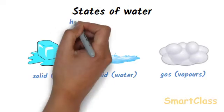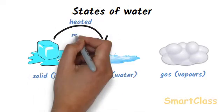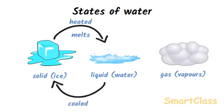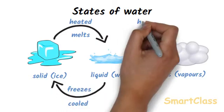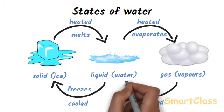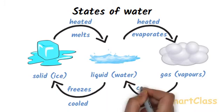When ice is heated it melts and changes into water. When water is cooled too much it freezes and changes into ice. Similarly, when water is heated it evaporates and changes into water vapors and when water vapor is cooled it condenses and changes into liquid water.